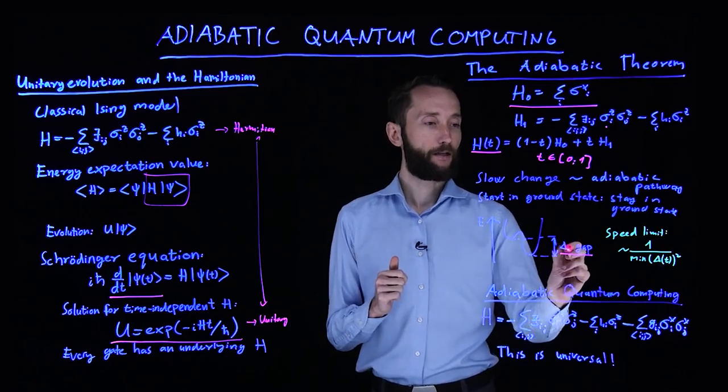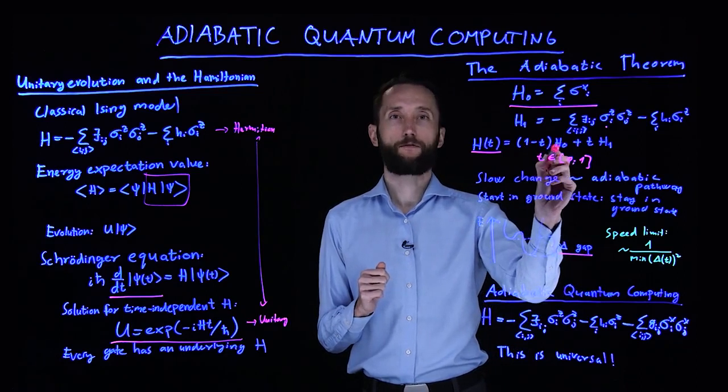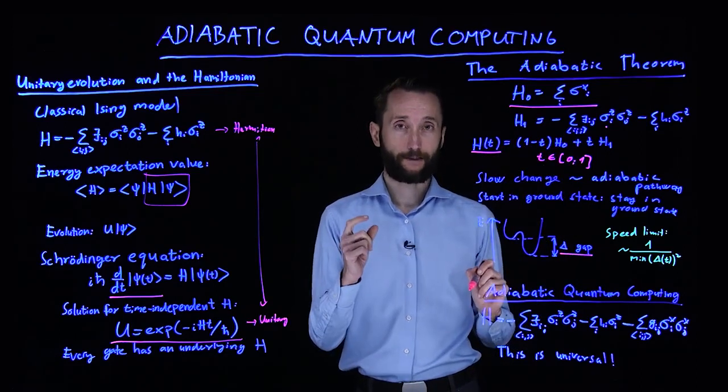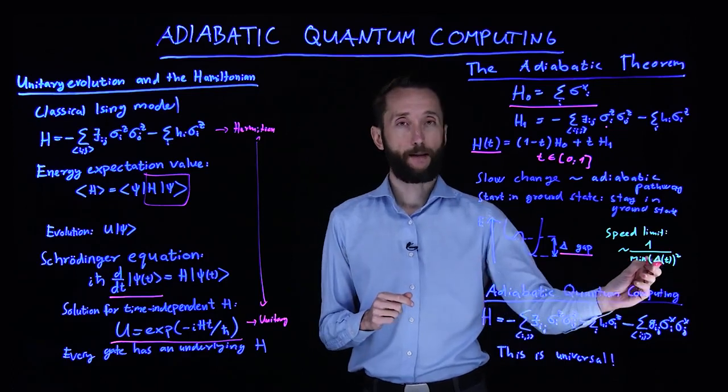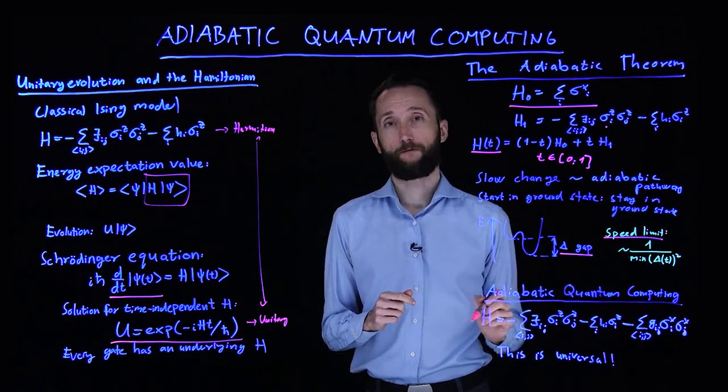And if we denote the gap by delta, then each and every one of the time steps in this change will have a different gap. You have to take the minimum of that and square it, and the speed limit depends on the inverse of that.